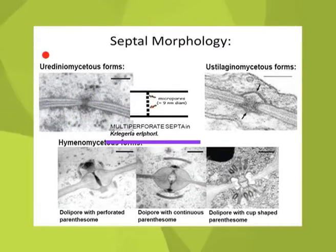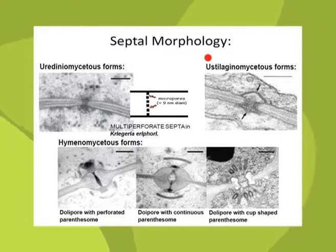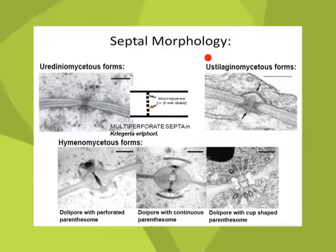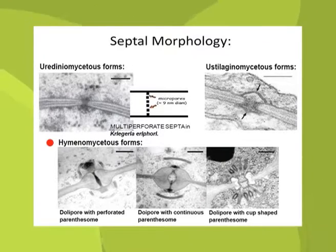However, in Kriegeria eriophori, multi-pore septa have been reported instead of a single large pore. In Ustilaginomycetes, the septa are not attenuated towards the centre and lack a true pore; the septal rim is somewhat inflated, and the degree of inflation varies from one species to another. The Hymenomycetes exhibit dolipore septa provided with typical parenthesomes.